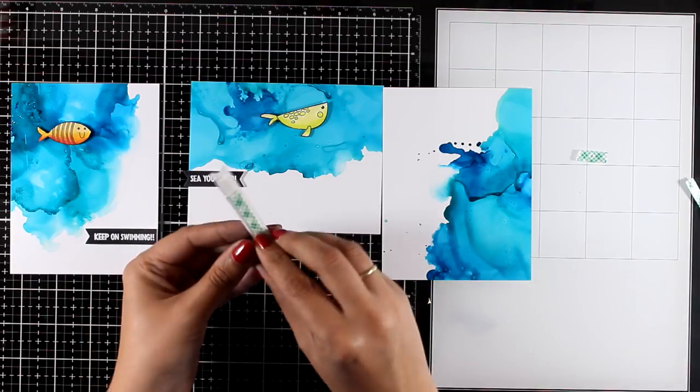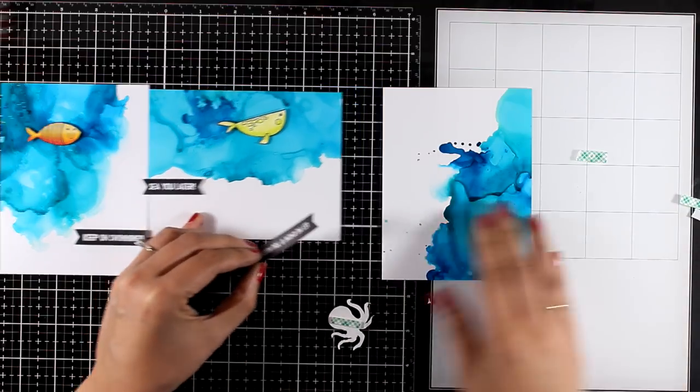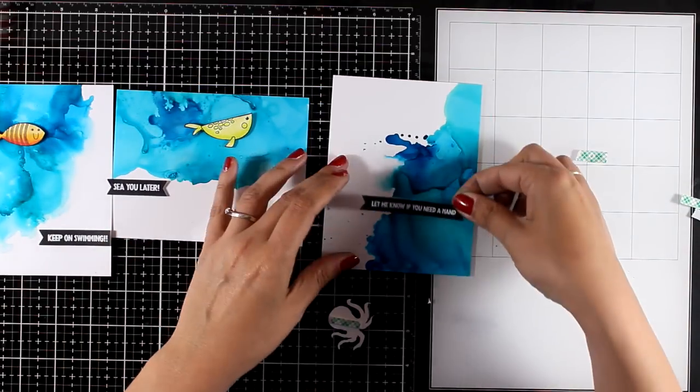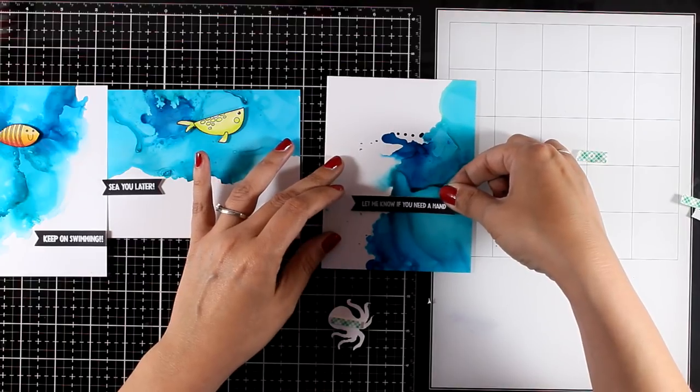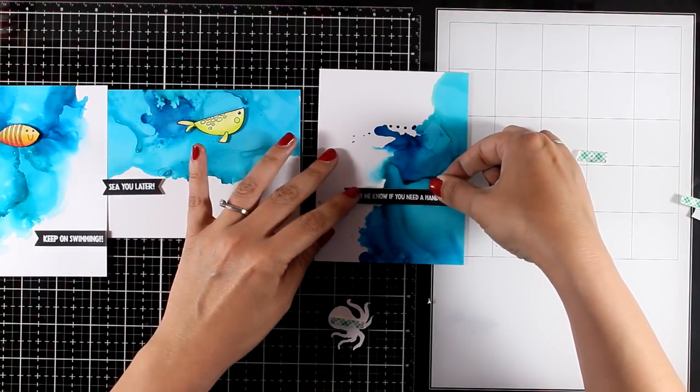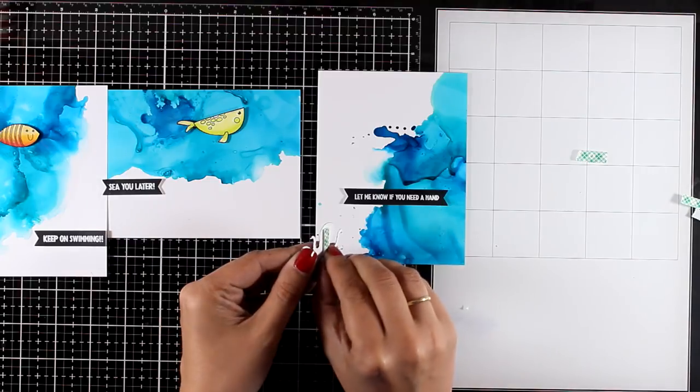So for the whale I went with the sentiment that says See You Later, and for the octopus I went with the sentiment that says Let Me Know If You Need A Hand. I'm going to stick everything with foam squares at the back and my three cards are ready.